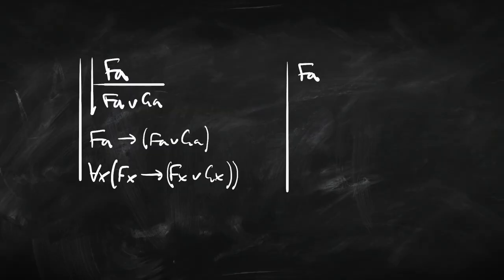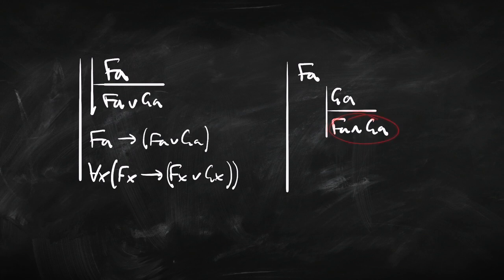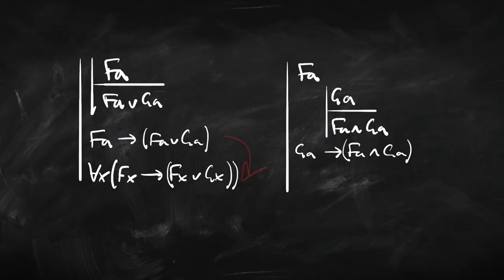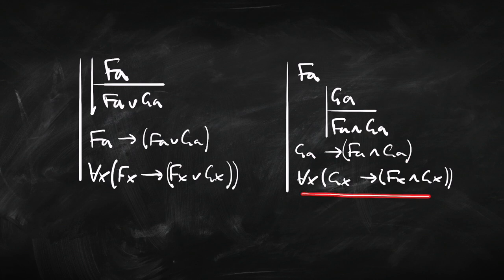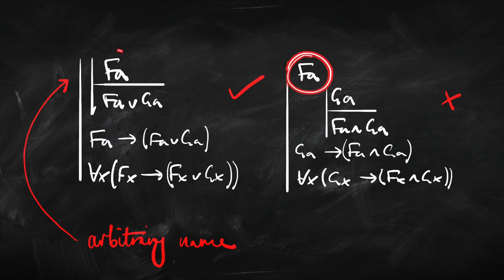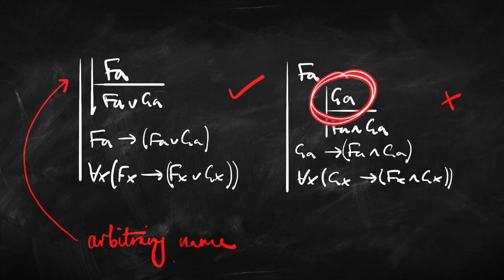Now let's have a look at something that looks quite similar but is going to be bad reasoning. Suppose we start off with a premise that a is F, and then assume further that a is also G. We can conclude from that that a is both F and G. Then by arrow introduction, since we assumed G and concluded F and G, we can infer: if a is G, then a is F and G. Now suppose we try the same move, inferring that this applies to everything — everything is such that if it's G then it's F and G. That's obviously not correct.